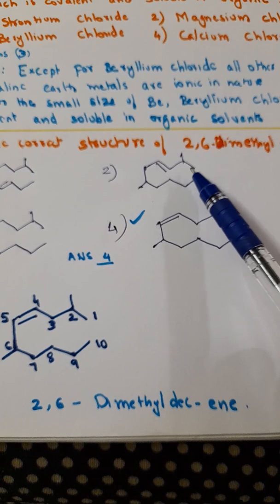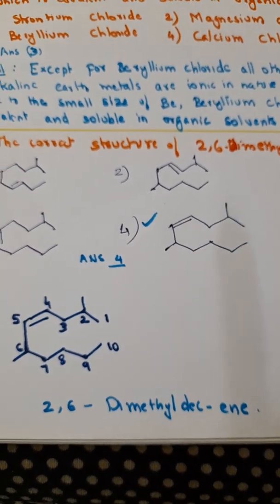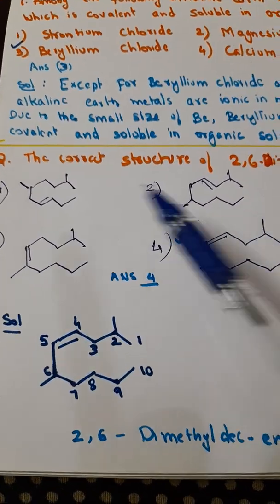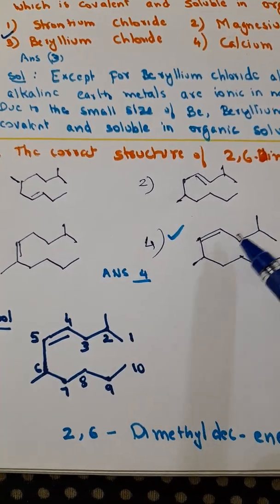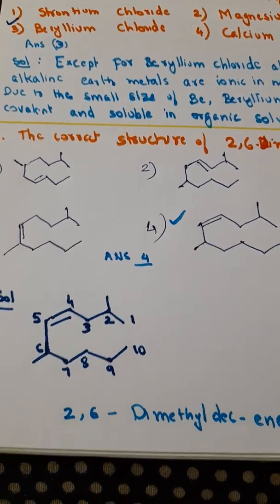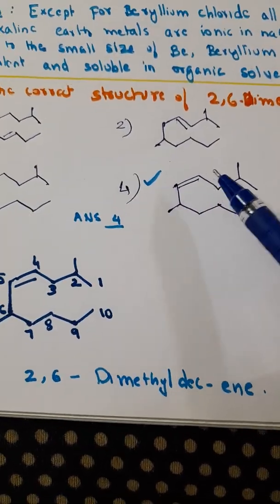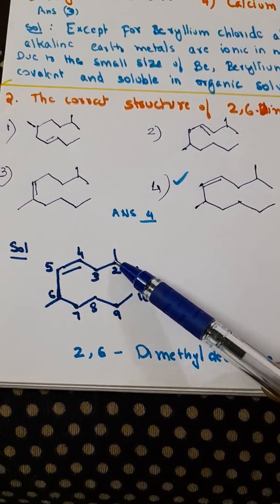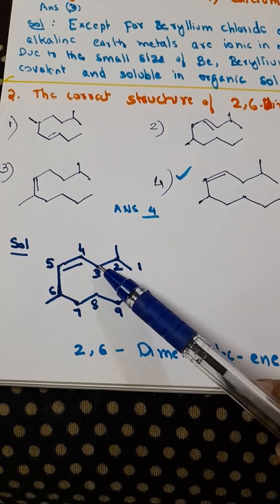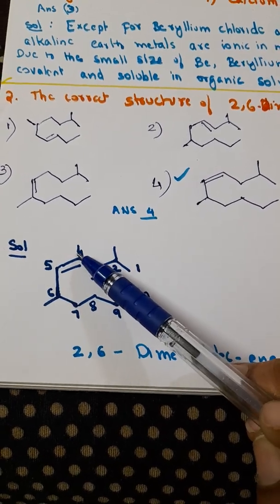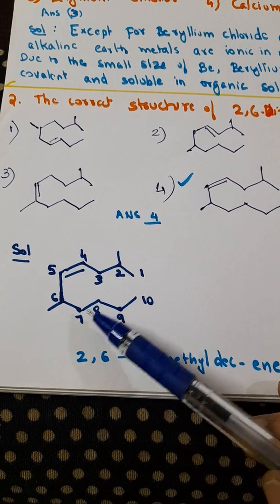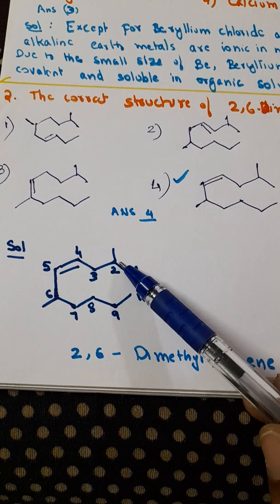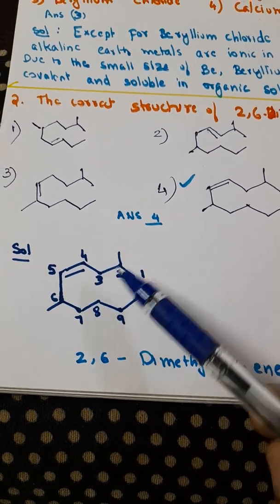Now, position of where the alkyl groups are attached are 2 and 6-dimethyl. Only if you number the correct position, you can identify the correct option. The correct option is answer 4. We will try numbering starting from here: 1, here this position 2, 3, then 4, 5, 6, 7, 8, 9, 10. Position 2 here and then here. These two are the positions.